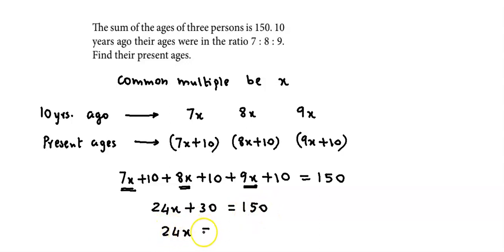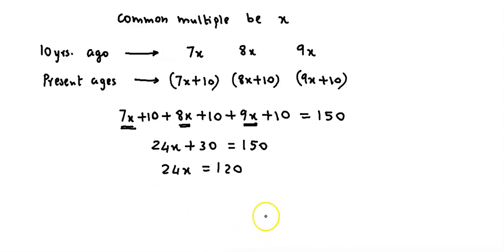So 24x is equal to 150 minus 30. This is 120. Here we will get x's value as 120 divided by 24. That gives us 5.